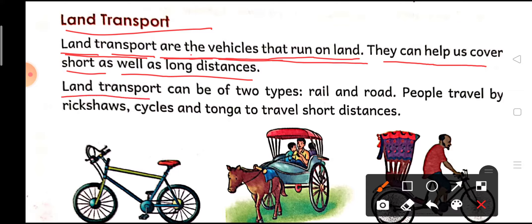Land transport can be of two types — rail and road. Land transport जो होते हैं वो two types के होते हैं। कुछ vehicles जो होते हैं वो road पर चलते हैं, कुछ vehicles जो होते हैं वो rail पर चलते हैं।